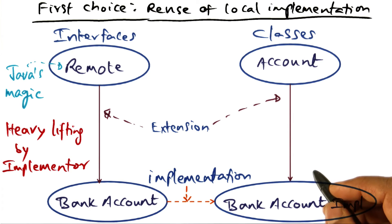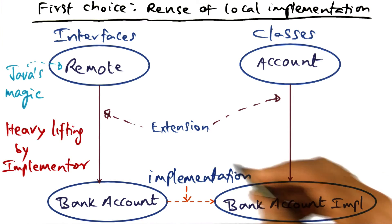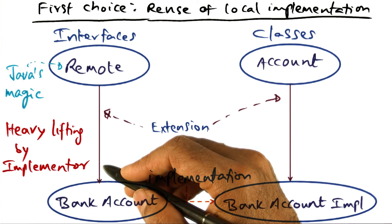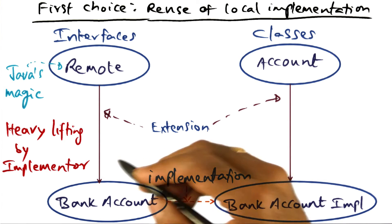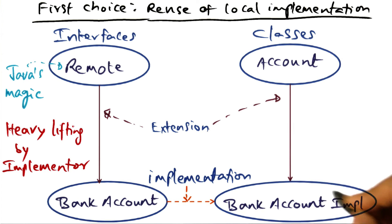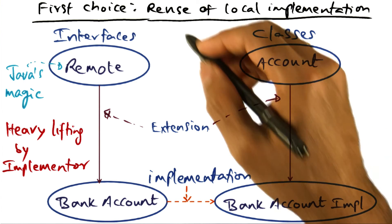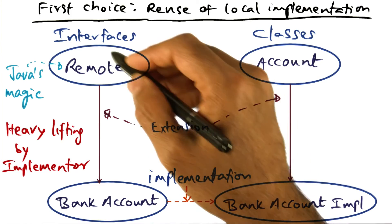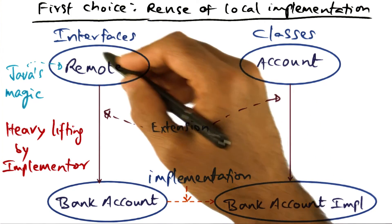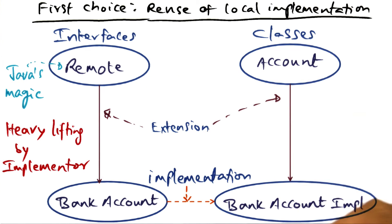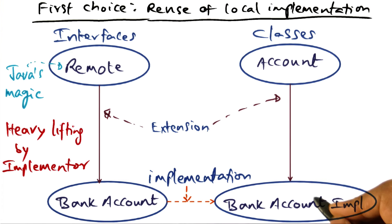All that is visible to the client is the interface. The actual location of the object is not something visible to the client. Therefore, the implementer has to do the heavy lifting of finding a way to make the location of the service visible to clients on the network. In the first choice, all that we used was the built-in class in the distributed object model of Java — the remote interface — to publish the interface for the BankAccount and the methods in it.